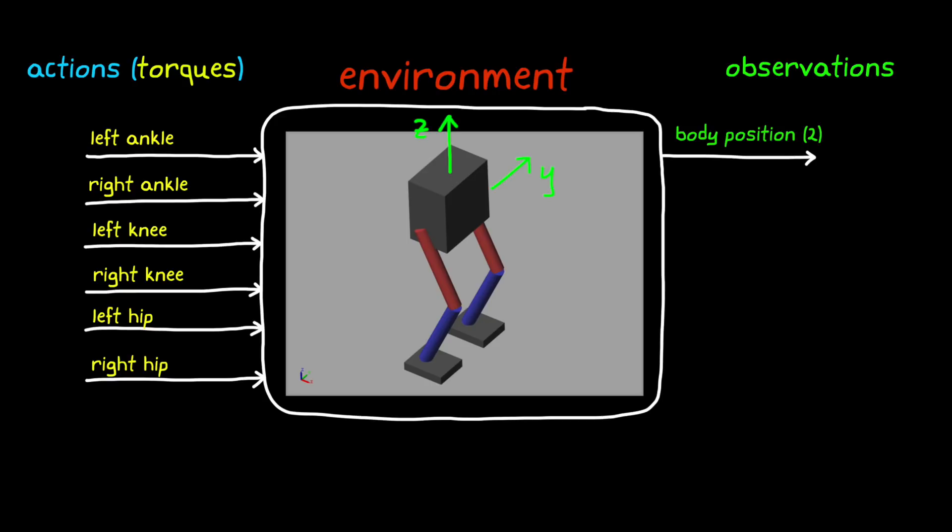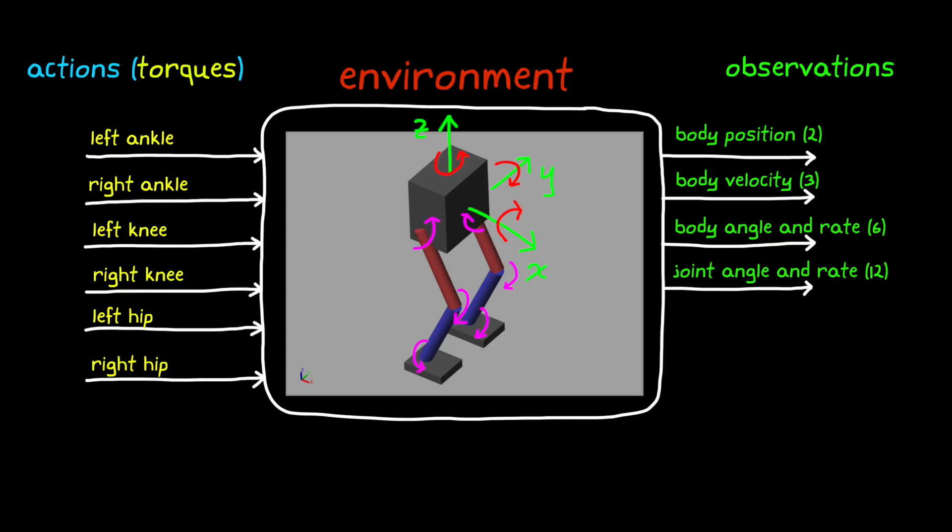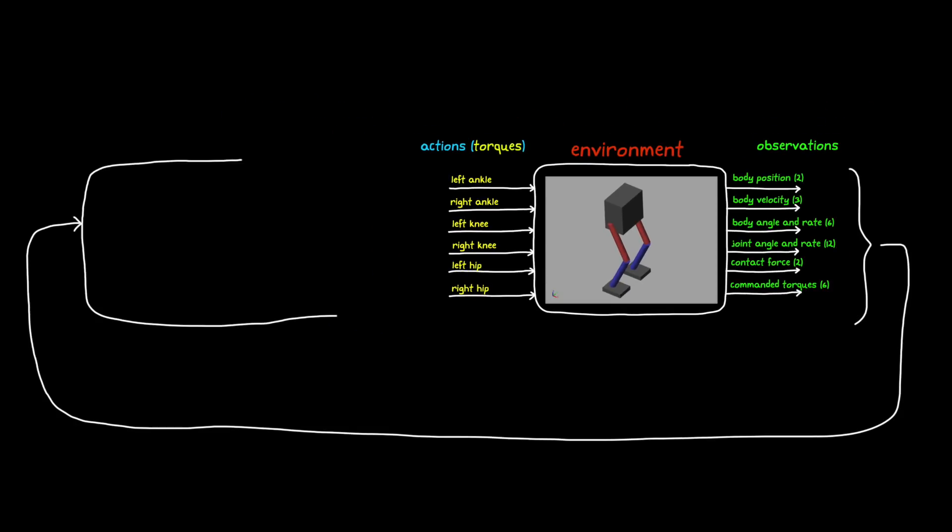The observations from the environment are based on the type and locations of sensors as well as any other data that is generated by the software. For this example we're using 31 different observations. These are the y and z body positions, the x, y, and z body velocity, and the body orientation and angular rate. There are also the angles and angular rates of the six joints, and the contact forces between the feet and the ground. Those are the sensed observations. We're also feeding back the six actions that we commanded in the previous time step, which are stored in a buffer in software. So in all, our control system would need to take in these 31 observations and then calculate the values of the six motor torques.